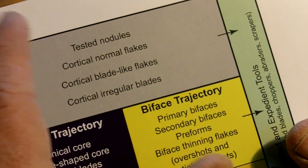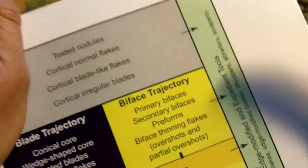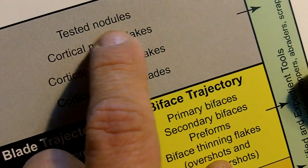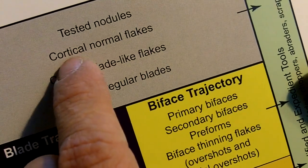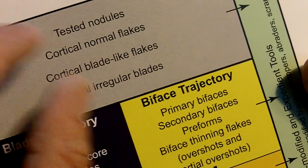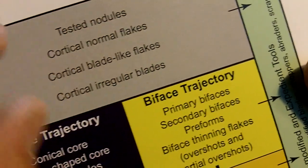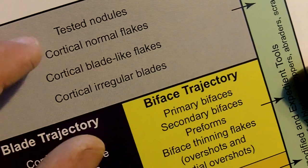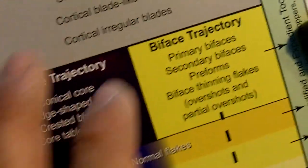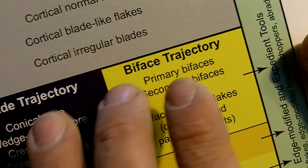At a quarry of stone, usually what you do is break off some pieces and bring them back to the campsite — just what you can use, not big chunks. What you find at the quarry site would be tested nodules, cortical normal flakes, a cortical blade, and cortical irregular blades. These are all blades or flakes that result from removing the cortex from your nodule. After you do that, if you determine your stone is good, you start either making blades or bifaces out of it.